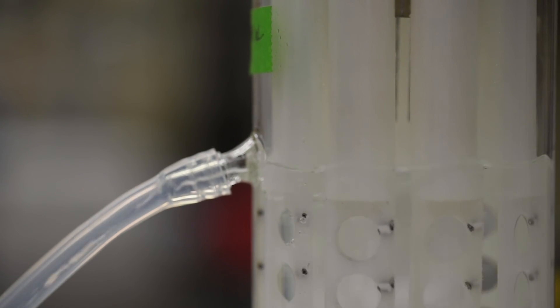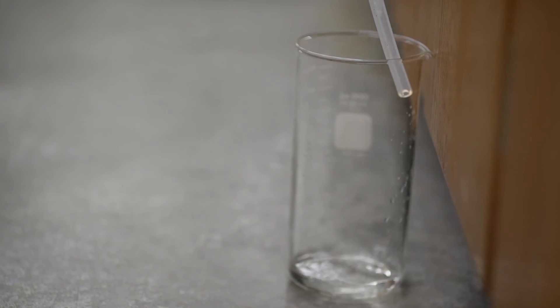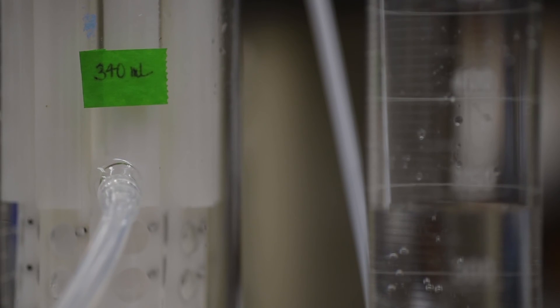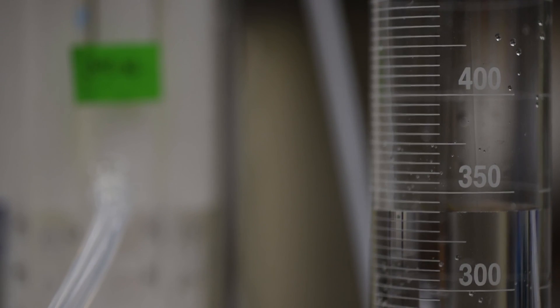Excess water will be displaced by rotation of the baffle. Pour the remaining water into a graduated cylinder to determine the reactor volume. The volume of this reactor is 340 milliliters.